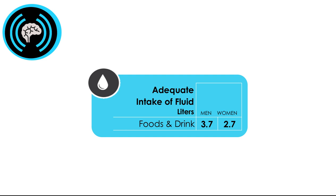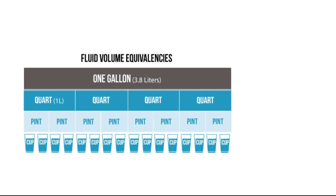To put in perspective how much 3.7 and 2.7 liters are, one gallon is approximately 3.8 liters. So the men's recommendation of about 3.7 liters is close to one gallon of fluids per day, and for women the recommendation of about 2.8 liters is about three-quarters of a gallon per day. That seems like a lot, but it's important to point out this isn't just from drinking fluids — it also includes the amount consumed from foods in the diet, which can range from about 20 to 30 percent.